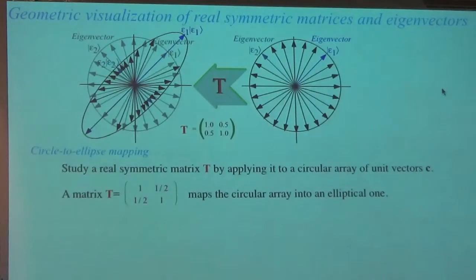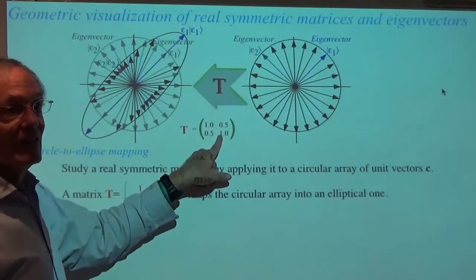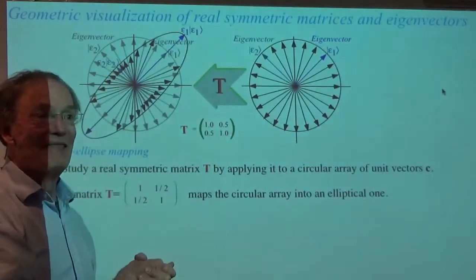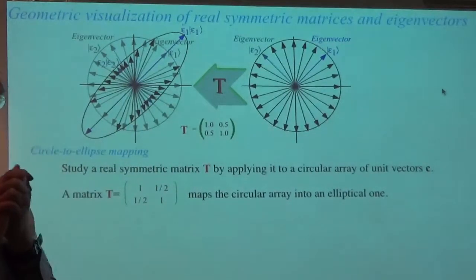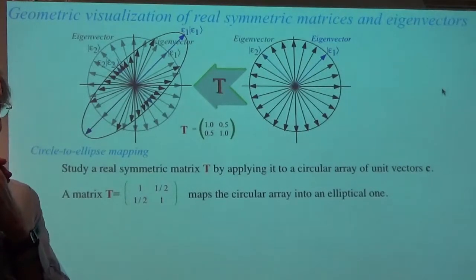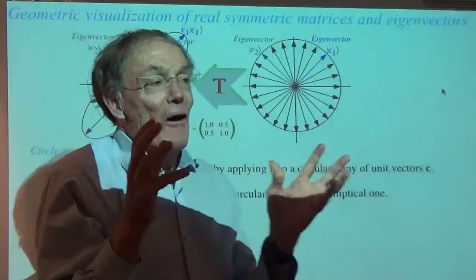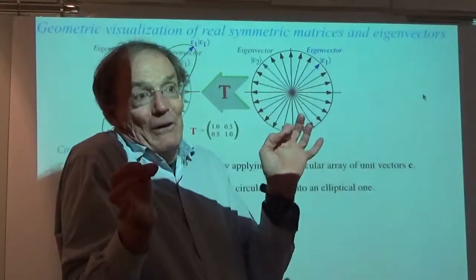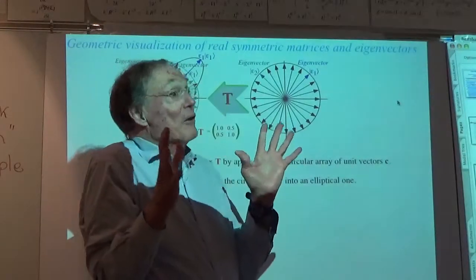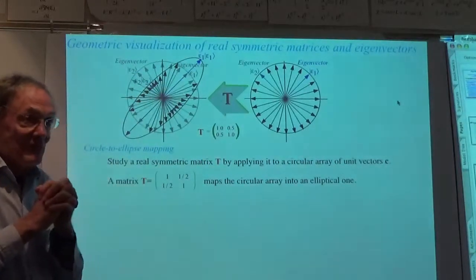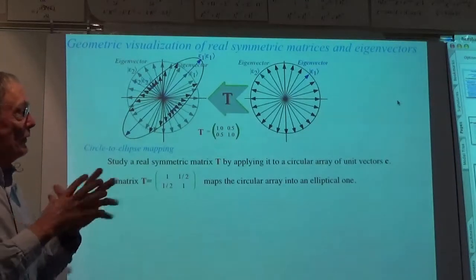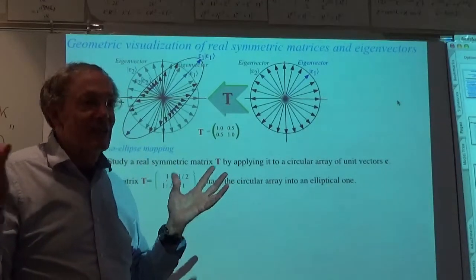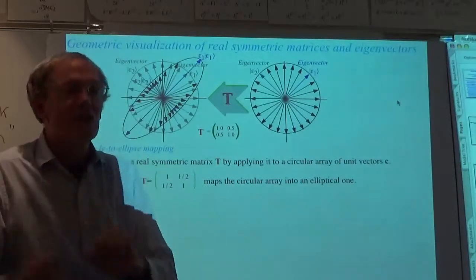Does that make sense? This operator changes the direction of all vectors — except two. Those are the eigenvectors we're looking for. You could really say that the matrix changed all the vectors in the sense that the ones it didn't are a set of measure zero — they're just points, very special points, but of course the very important ones. This is a kind of visualization that so many students go through a course in linear algebra and not have. It's really important to have — this is the difference between Feynman and the other guys.